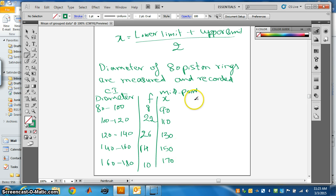Now we find fx - f multiplied by x. It is 720. This will be 2420.